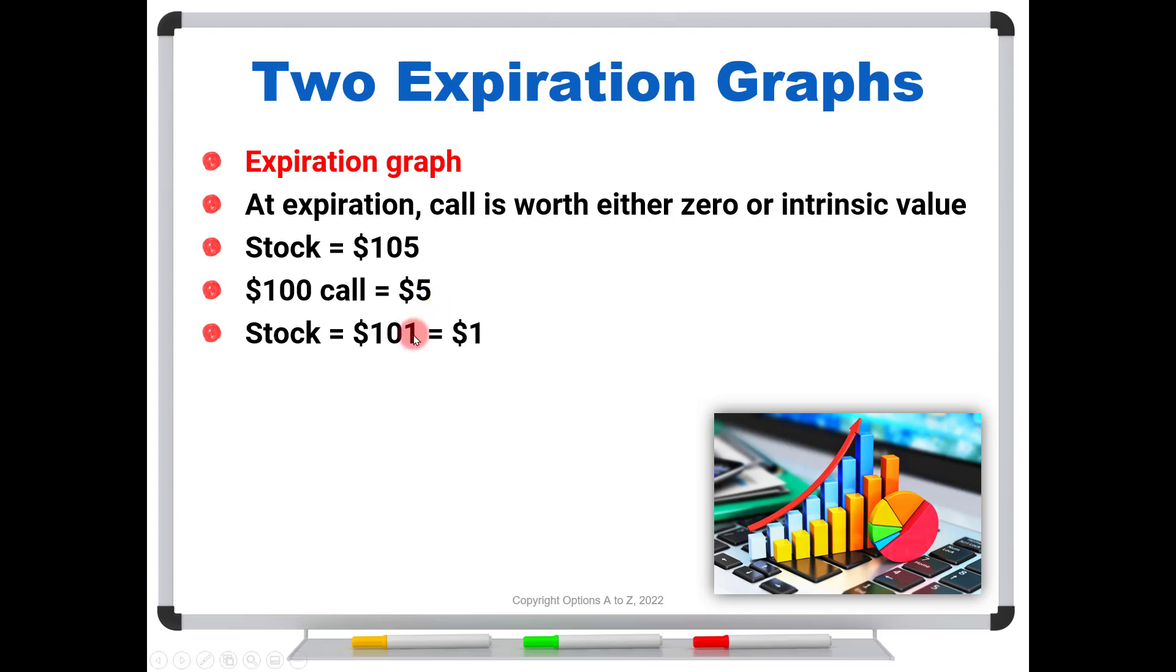On the other hand, let's say that the stock is trading at $101 instead of $105. Now the graph is going to show that this $100 call is worth only a dollar. And if the stock is equal to $100 or lower, it's going to show the option is worth zero, or that you are at the point of maximum loss.